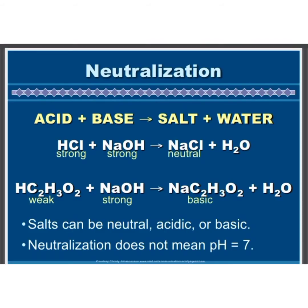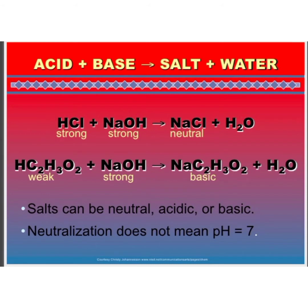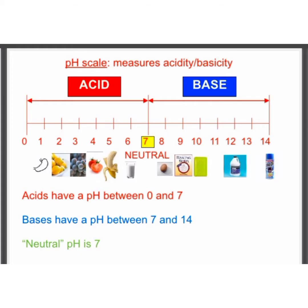Neutralization: when an acid reacts with a base, it forms salt and water. Salts can be neutral, acidic, or basic. Neutralization does not mean pH is equal to 7. The pH scale helps measure acidity or basicity. Acids have a pH ranging between 0 and 7, bases have a pH between 7 and 14, whereas neutral means pH is equal to 7.